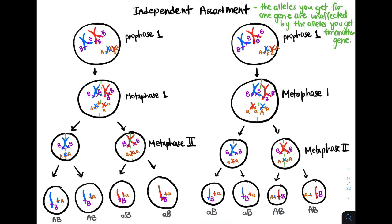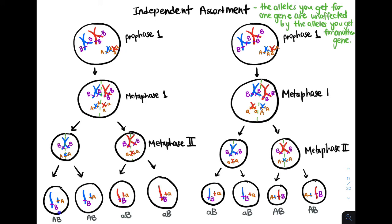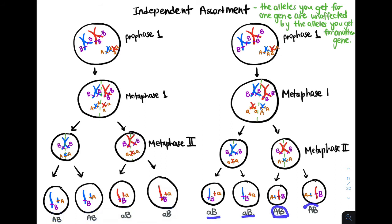I've actually shown an example of what it would look like if we had alleles on certain genes on these chromosomes. If you take a look at the gametes that we form from meiosis on the left, we get big A and big B, big A and big B, little a and big B, and little a and big B. But meiosis on the right results in four gametes that have little a and big B on the left and big A and big B on the right.